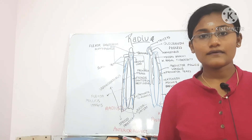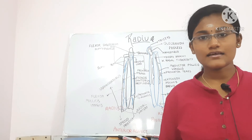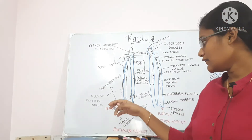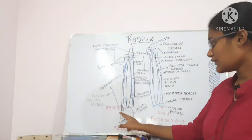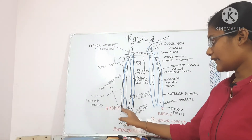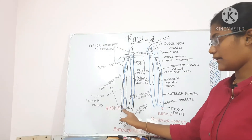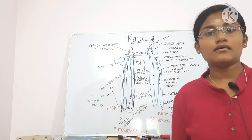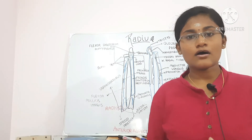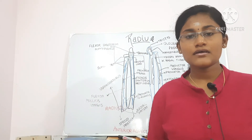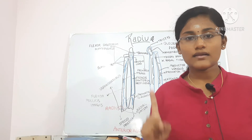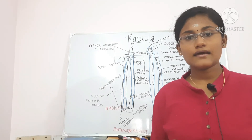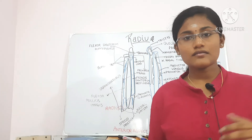The lateral surface of the lower end produces the styloid process, and just above the lateral surface there is a small muscle called the brachioradialis. In the lower end, there is one secondary centre which appears at the age of one year and fuses by the 20th year.